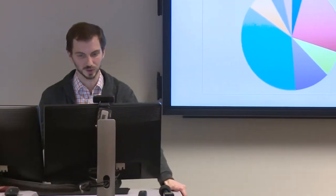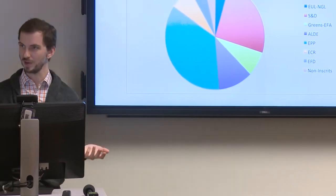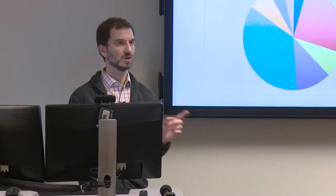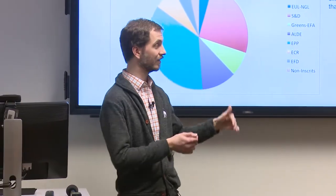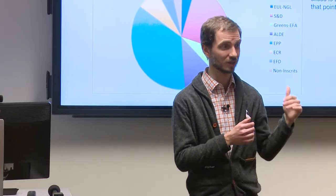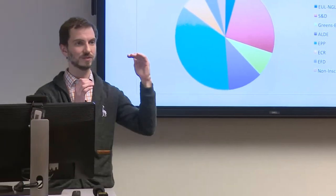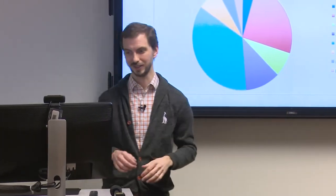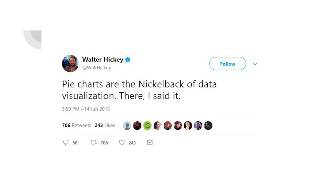For example, this chart shows different parties in European Parliament. You can maybe get a rough sense of which slice is bigger, but if you represented this as a bar chart — one bar per party with their proportion of seats — you wouldn't have to do as much work to make a comparison. With a bar chart you have a very discrete, clear view: this one's higher, this one's lower. Looking at little wedges of pie is not the easiest geometric comparison. Pie charts are the Nickelback of data visualization.